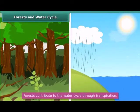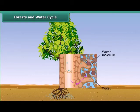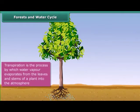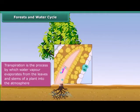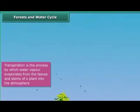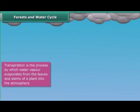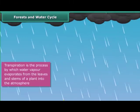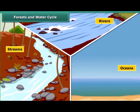Forests play an important role in the water cycle as well. They contribute to it through transpiration. Transpiration is the process by which water vapor evaporates from the leaves and stems of a plant into the atmosphere. It then rises up in the air, and when it comes in contact with a cooler surface, it condenses and forms clouds. When the water droplets in the clouds become heavy, they fall down as rain. The rainwater flows into streams, rivers and oceans, thereby completing the water cycle.